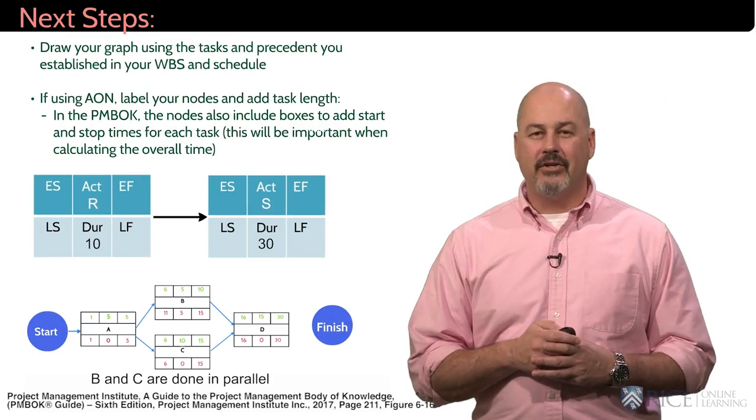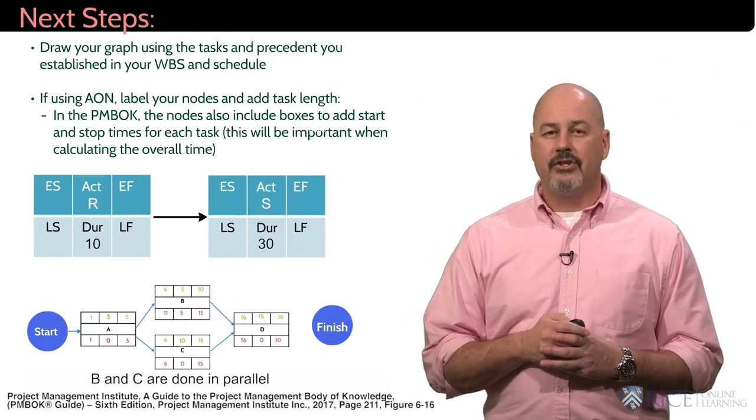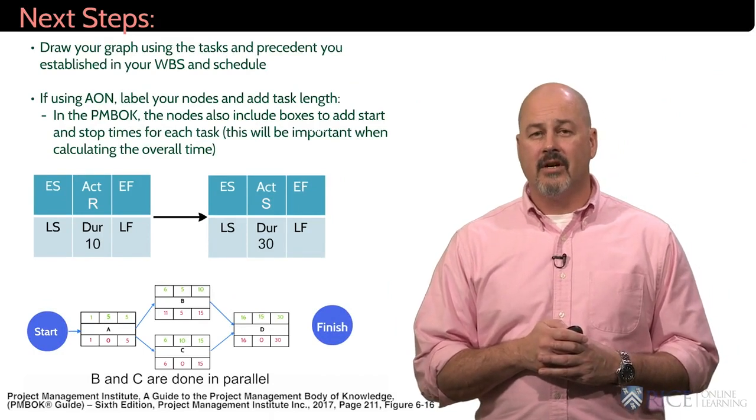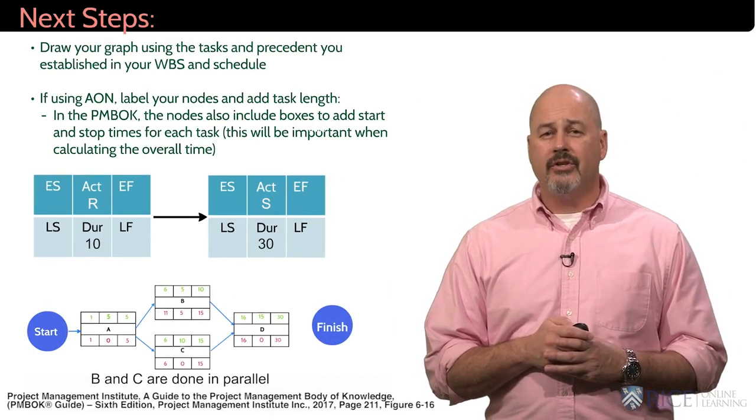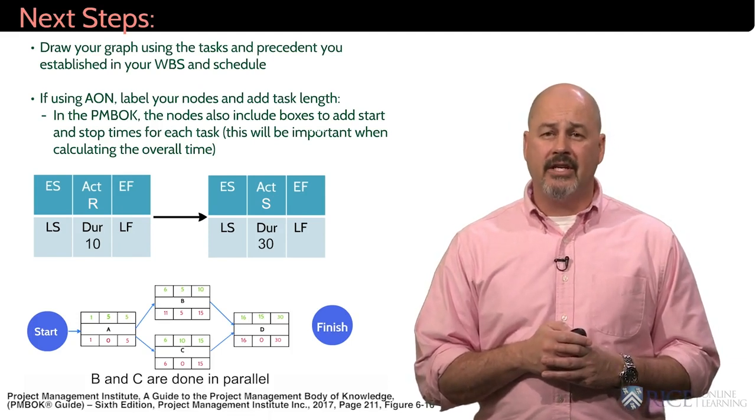After you've determined which type of diagram to use, you need to draw a diagram which shows precedents, labels the nodes, and shows the durations according to precedents. For this example, I've chosen to use the activity on the node type and include the task and duration in each node.